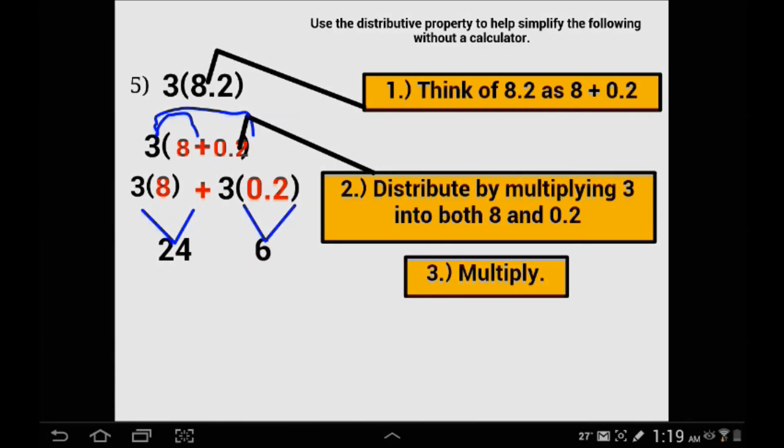3 times 2 tenths is kind of like 6. However, 3 times 2 is 6, but we are multiplying 3 times 2 tenths. We better stick a decimal in there. So 24 plus 6 tenths is very simple: 24.6.